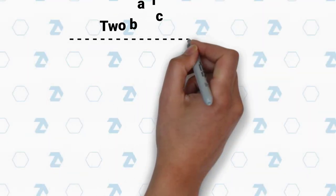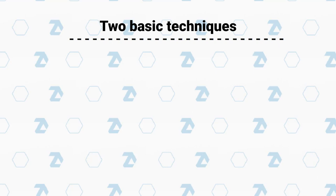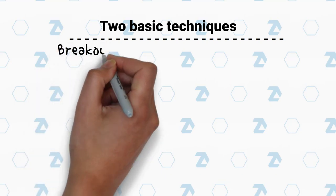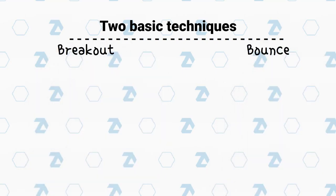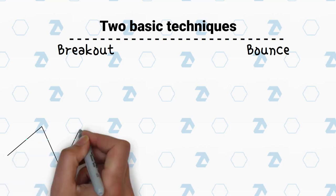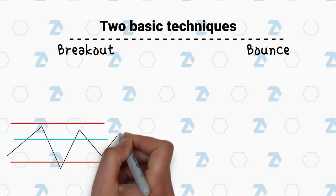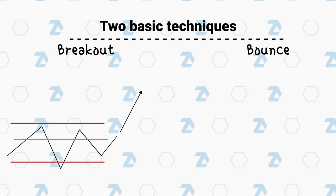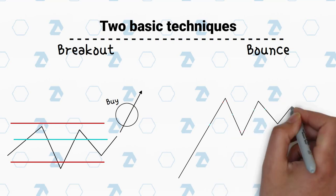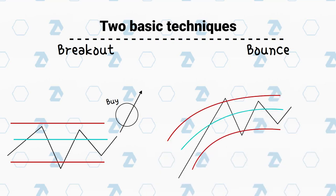What trading signals does the dynamic levels channel indicator give? We don't claim to cover all trading techniques used with the market profile. In this video we will present two approaches. The first one is a breakout, where the price breaks out of the value area on increasing volume, indicating that the balance of supply and demand is broken. The second one is a bounce, where the signal comes when a new balance is regained after the POC level is changed.